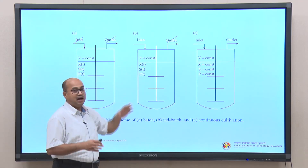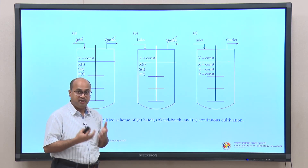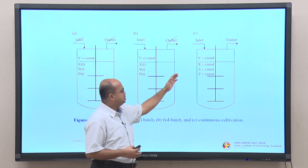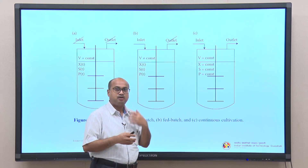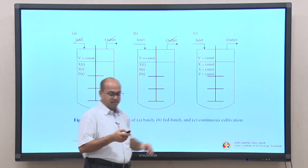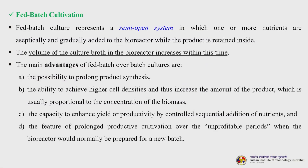In fed-batch culture, one or more nutrients are aseptically added to the bioreactor while the product remains inside, and the culture volume increases with time. The main advantages of fed-batch over batch culture include the ability to prolong product synthesis, achieve higher cell densities, increase product amounts proportional to biomass concentration, enhance yield or productivity by controlled sequential nutrient addition, and extend productive cultivation over periods when the bioreactor would normally be prepared for a new batch.